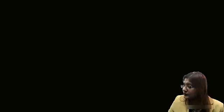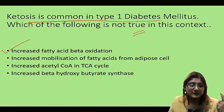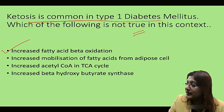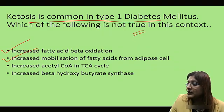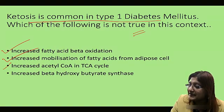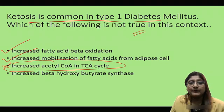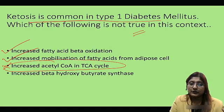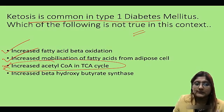So, focusing on this question and looking at the options — which of the following is not true? Increased fatty acid beta-oxidation is a true statement. Increased mobilization of fatty acid from triacylglycerol also happens — that is also true. Increased acetyl-CoA in the TCA cycle does not happen, so this is the answer. Because acetyl-CoA is diverted for ketoacidosis, and already a lot of acetyl-CoA has saturated the TCA cycle.